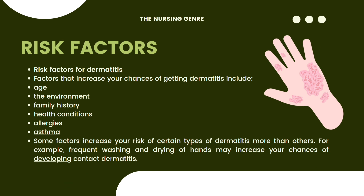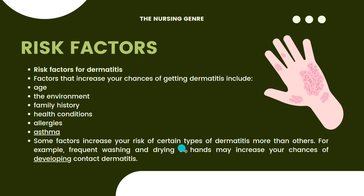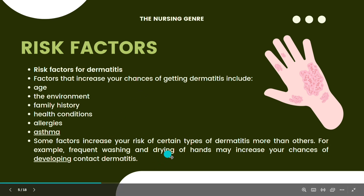Next, risk factors. Factors that increase your chances of getting dermatitis include age, environment, and family history. Health conditions such as allergies and asthma also increase risk. Some factors increase your risk of certain types of dermatitis more than others. For example, frequent washing and drying of hands may increase your chances of developing contact dermatitis.